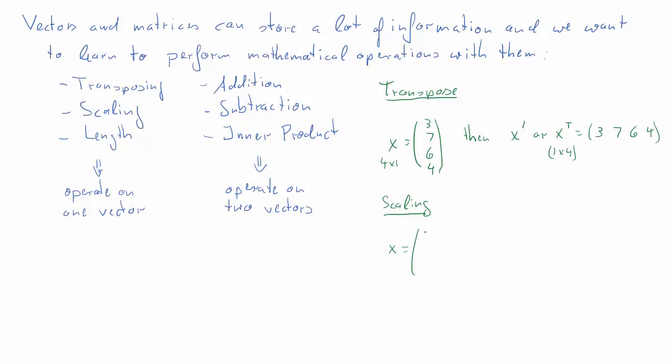So next scaling. What does scaling do? Let's work with the same original vector and let's also consider a factor, a scalar. We call it a. Let's say in this particular case that value a takes the value 2. So then what is a times x? So a scalar times a vector. Well each element is going to be multiplied with that scalar factor 2. So the result is 6, 14, 12, 8.